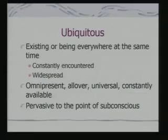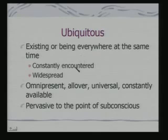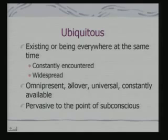What does ubiquitous mean? Existing or being everywhere at the same time, constantly encountered, widespread — omnipresent, universal, and constantly available. That means whenever I am in a room, if I want to have a look at my email, the computer senses that I am here, figures out where my email server is, and presents the email on my screen. The presence of yourself along with the computers and communication is what ubiquitous means.